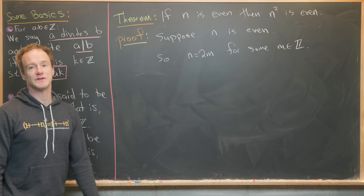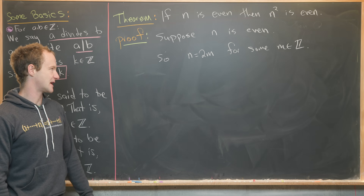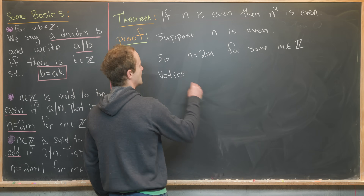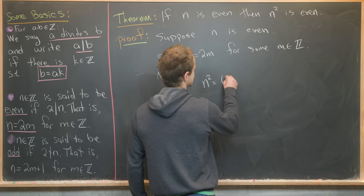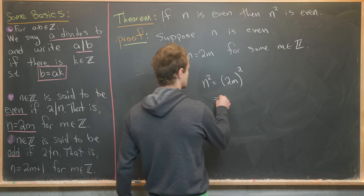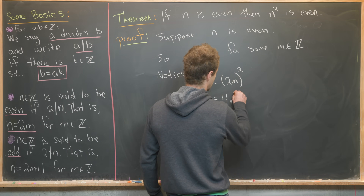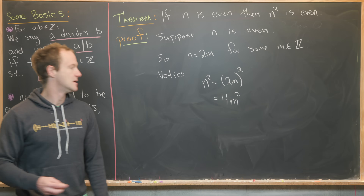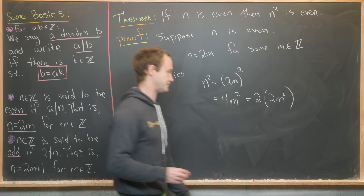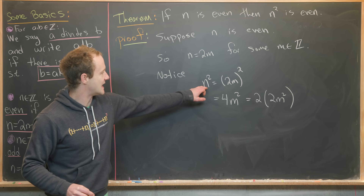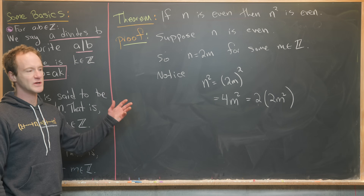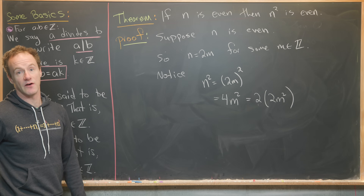Now we're ready to do some calculation. Notice that n squared equals (2m) squared, which equals 4m squared, which equals 2 times 2m squared. So we've written n squared as two times another number, which is exactly the definition of an even number.